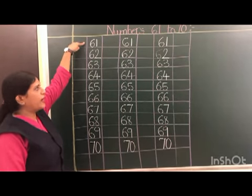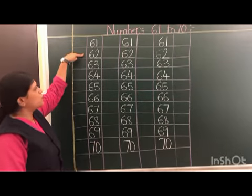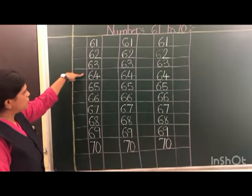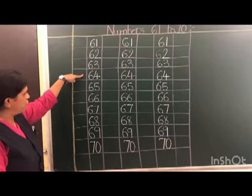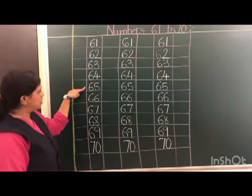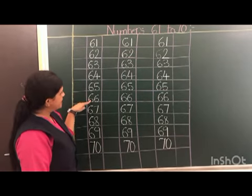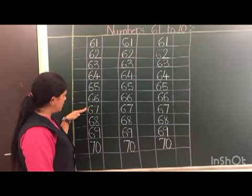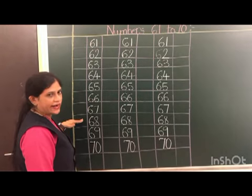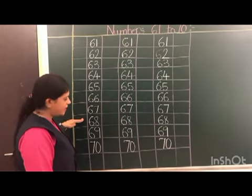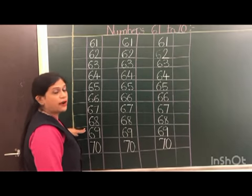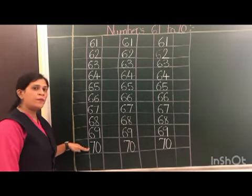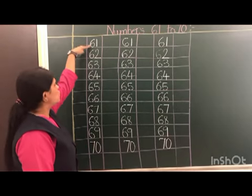61, 62, 63, 64, 65, 66, 67, 68, 69. After 69 which number comes? 70.